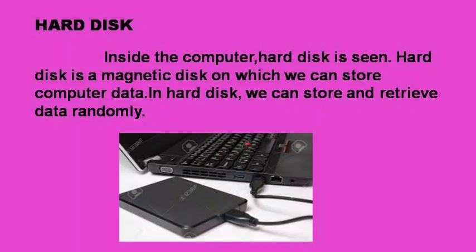The last one is hard disk. Inside the computer, a hard disk is found. A hard disk is a magnetic disk on which we can store computer data. In a hard disk, we can store and retrieve data randomly. There are two types of hard disk: internal hard disk and external hard disk.